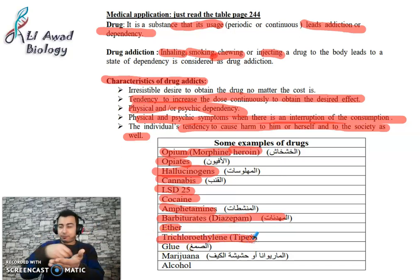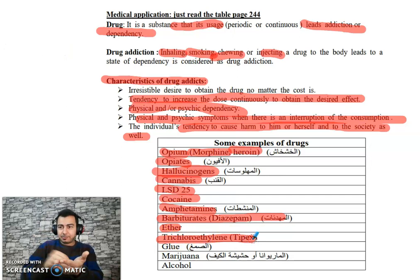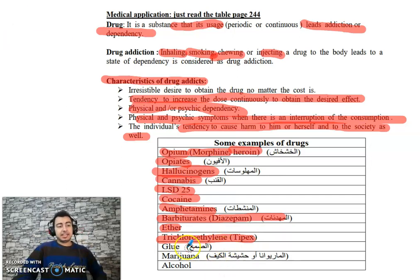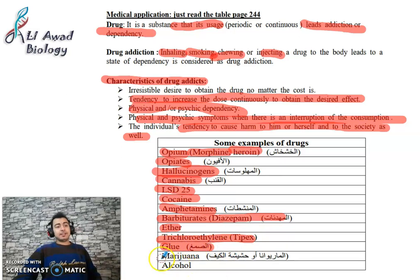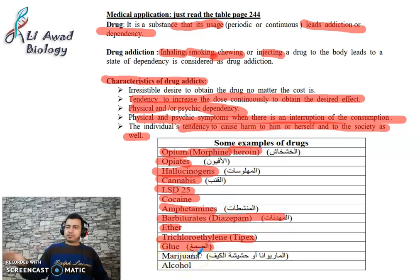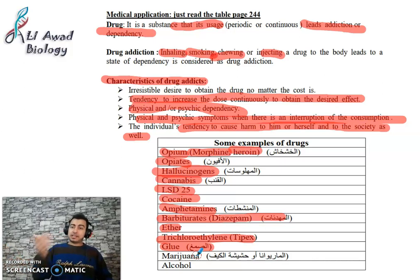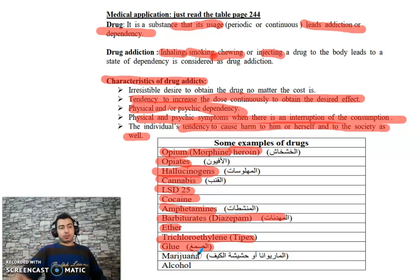Correction fluid — the white liquid used to erase ink — some people sniff it repeatedly and become addicted. Glue, gasoline, and similar substances follow the same idea. Hashish (حشيشة الكيف) is very common in Lebanon, especially grown in the Bekaa Valley, and it is smoked. In general, it is considered a drug, though it does have many significant medical benefits.